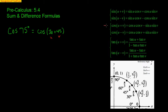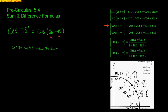So cosine of u plus v — I'm going to be using this formula right here. Following along with what it says, it's the cosine of u times the cosine of v. So I'm going to write down the cosine of 30 times the cosine of 45, and then minus the sine of u, which was 30, times the sine of v, which was 45. Now I need to apply the values that come from your unit circle. The cosine of 30 degrees — 30 degrees is pi over 6 — cosine goes with the x value, so that's radical 3 over 2, times the cosine of 45, which is radical 2 over 2. Those are being multiplied.